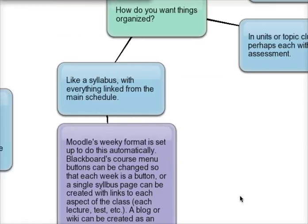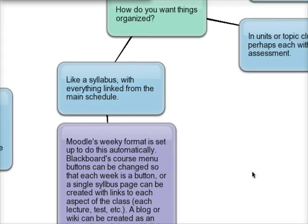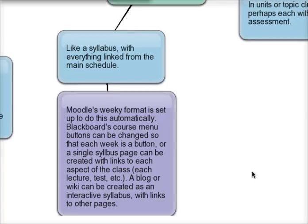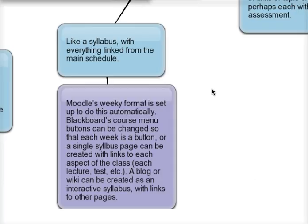If I prefer things organized like an actual syllabus where everything is linked from one big main schedule, there are several ways to do that as well. Moodle's weekly format is already set up to do this — it even puts in the dates for you once you set the starting and ending dates of the class. Blackboard's course menu buttons can be changed so that each week is a button, and a single syllabus page can be created with links to each aspect of the class, including lectures or tests created inside Blackboard. Similarly, a blog or a wiki can be created as an interactive syllabus by putting links in a main syllabus page to the other pages and content in the class.